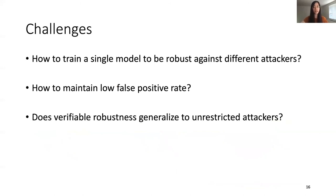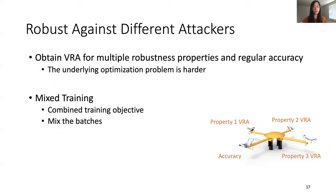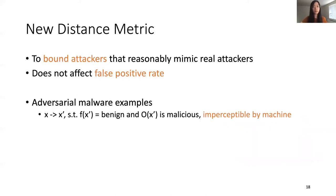To obtain verifiable robustness properties with high VRAs, we address three challenges: how to train a single model robust against different attackers, how to maintain low false positive rates, and how verifiable robustness generalizes to unrestricted attackers. For robustness against different attackers, we use a mixed training technique with a combined training objective, randomly mixing batches belonging to different properties to balance training goals. We also propose a new distance metric to bound attackers in a way that mimics real attackers without affecting the false positive rate.